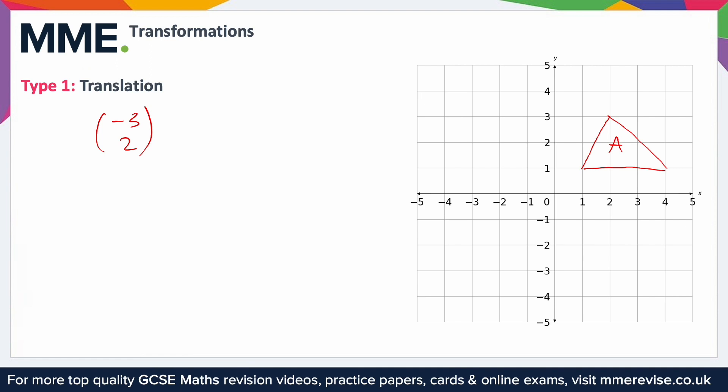What this means, so when you see a vector when we're talking about translations, it means the top value is the x value and the bottom is the y and it's how much you're going to move in those directions.